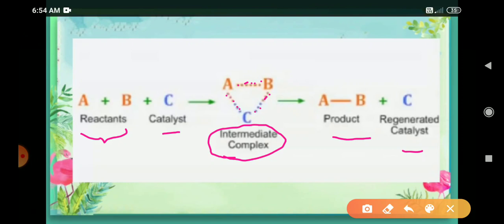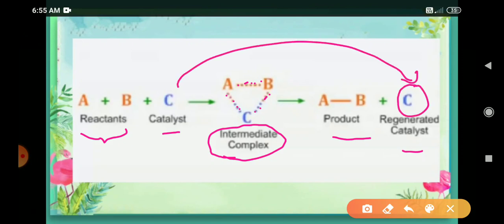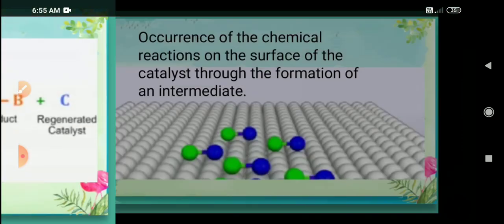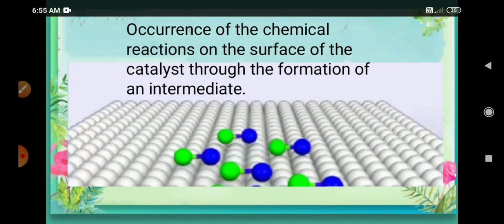Later on, this intermediate breaks up into product plus C, where the catalyst is regenerated. The catalyst at the end of the reaction is unchanged — its mass and composition do not change. That is why catalysts are required in very small quantities, because after each reaction the catalyst remains as it is. This theory stresses the occurrence of chemical reaction on the surface of the catalyst through the formation of an intermediate.